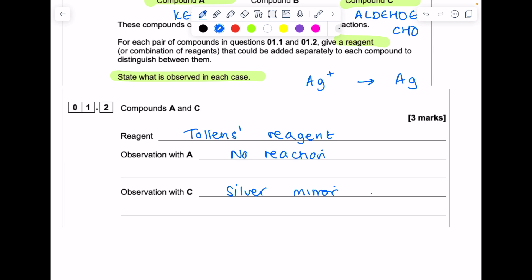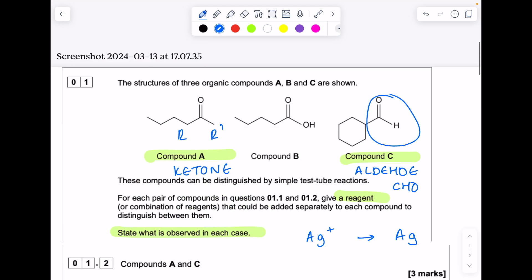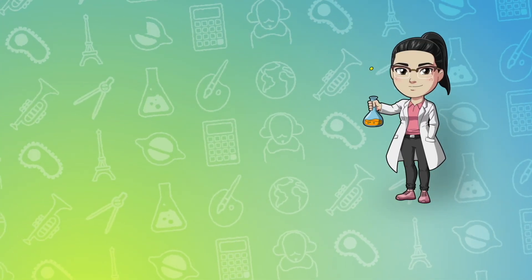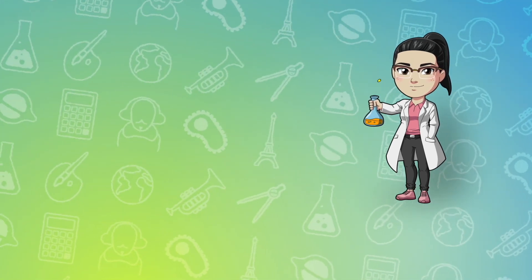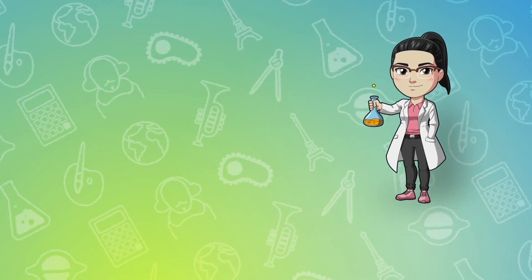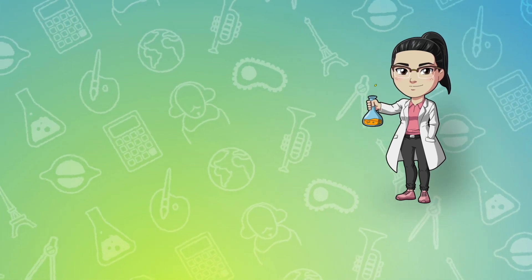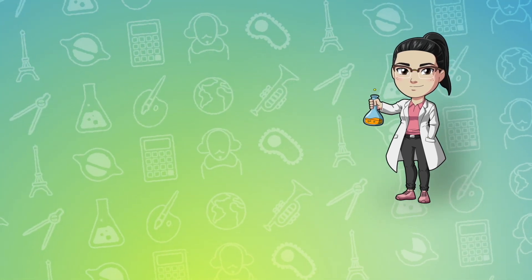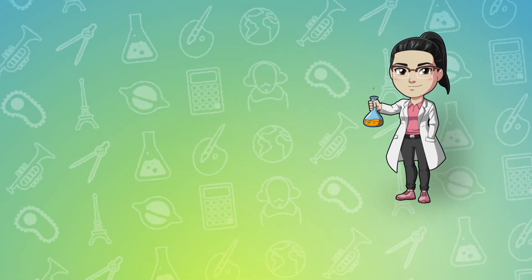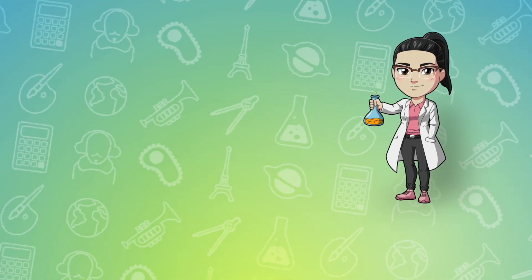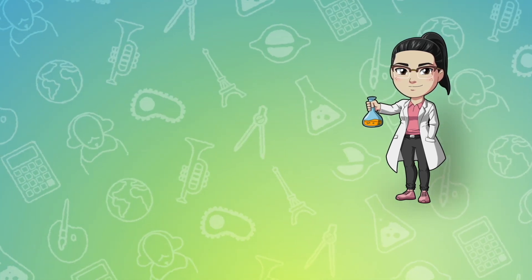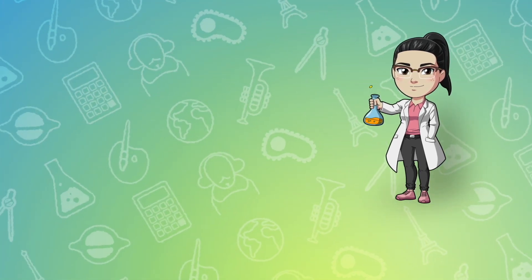If you decided to go along the Fehling's reagent route, you would say again that there'd be no observation with A, the ketone, but the observation with C would be a brick red precipitate.